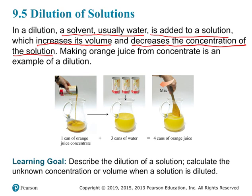You might pour one can of concentrated juice into a larger pitcher and then add three cans of water, making a total of four cans of juice. It's very similar in chemistry — we usually have a stock solution of a chemical and pull from that to make more dilute solutions. I used to do that in my research with concentrated amino acid solutions, diluting them to whatever concentration I needed for each experiment.